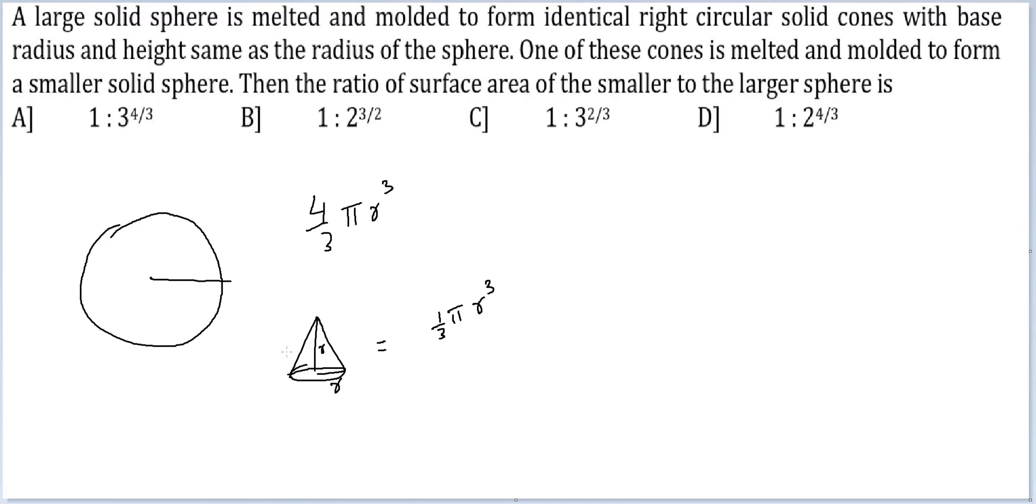So we don't know how many such small cones have been made. But looking at these expressions you can say 4 by 3 pi r cube is equal to n into 1 by 3 pi r cube. You can see that 4 such cones have been made.